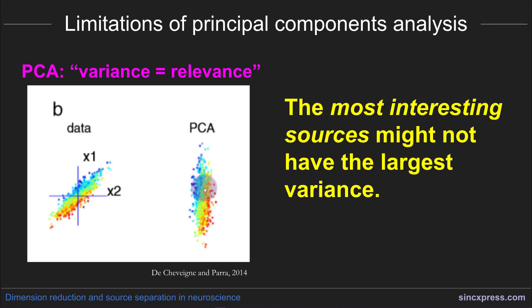In fact, in many datasets, the features of the data that have the largest variance are the artifacts in the data. Those might be eye blink artifacts, they might be EMG electrical muscle activity, they might be electrical or mechanical noise. There's all sorts of artifacts in data that have much higher covariance than the features of the data that you tend to be interested in.